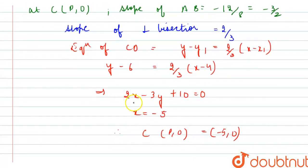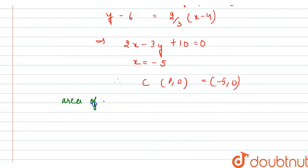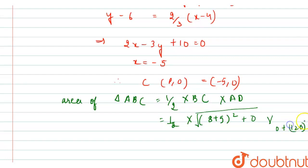Now we have to find the area of the triangle. Area of triangle ABC equals half into BC into AD. BC is the base and AD is the perpendicular. Putting the values, it would be half into, using the distance formula, BC is (8 plus 5)² plus (0 minus 0)² under root. AD equals (0² plus 12²) under root.